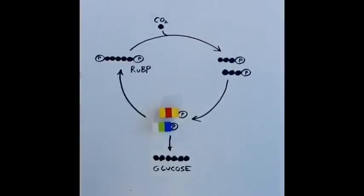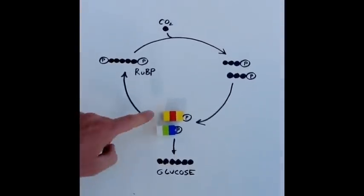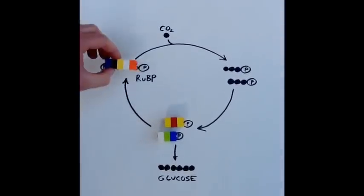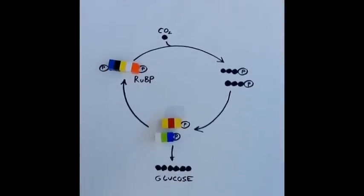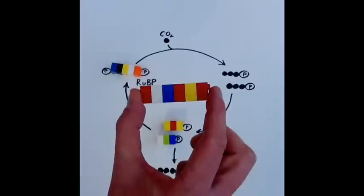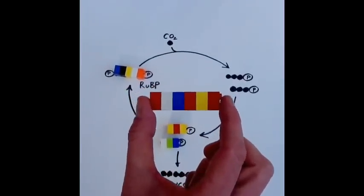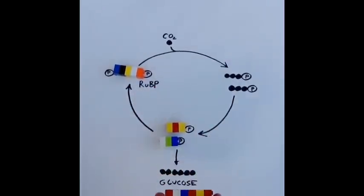Then there are two things that have to happen with these three-carbon molecules. First, they have to be used to regenerate the ribulose bisphosphate so the whole cycle can continue. But they also need to be used to make an important six-carbon molecule glucose. And remember that making glucose is what photosynthesis is all about.